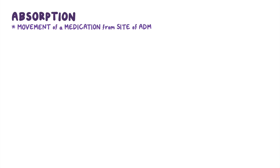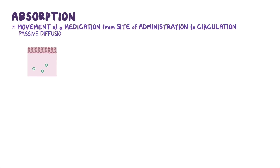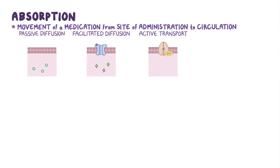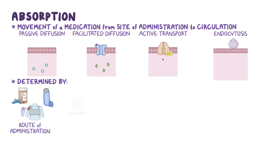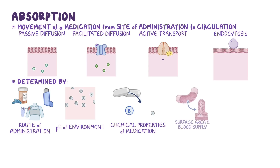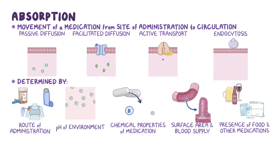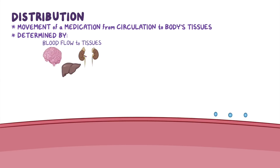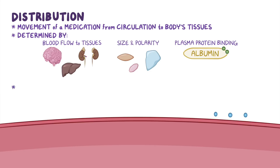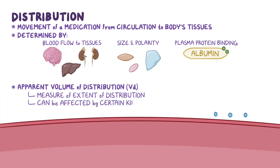As a quick recap: absorption refers to the movement of medication from the site of administration into the circulation. It can occur through passive diffusion, facilitated diffusion, active transport, and endocytosis, and is determined by the route of administration, the pH of the environment, the chemical properties of the medication, the surface area and blood supply of the absorptive surface, the amount of contact time with the absorptive surface, and the presence of food or other medications in the gastrointestinal tract. Bioavailability is a measure of the absorption, and distribution is the movement of a medication from the circulation into the body's tissues, which depends on blood flow to tissues, size and polarity, and plasma protein binding. The apparent volume of distribution, or VD, is a measure of the extent of distribution, and it can be affected by certain kidney and liver conditions.